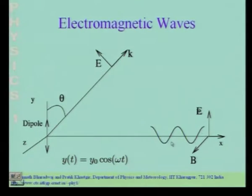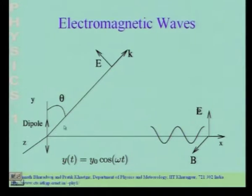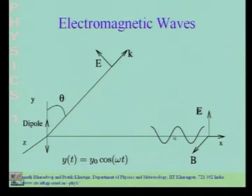If you are located along the x-axis at a large distance from the dipole — remember the dipole is aligned along the y direction — then the electric field at this point is going to be parallel to the direction of the dipole. The electric field is also going to oscillate up and down, with a phase difference due to the propagation time, and the oscillating electric field pattern propagates forward along the positive x direction.